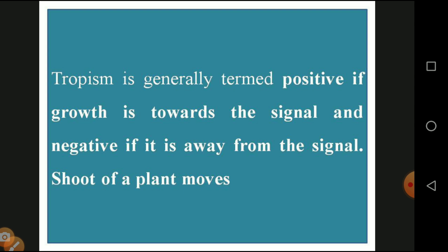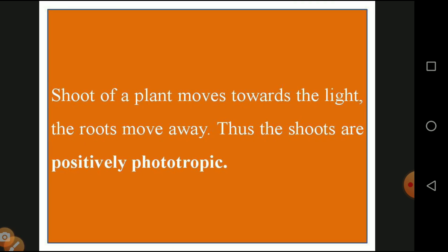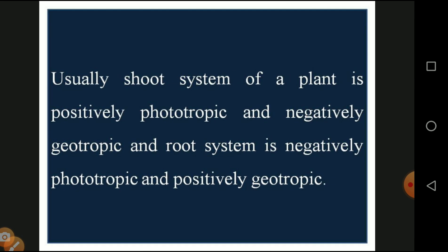Tropism is generally of two types: positive growth, meaning movement towards the stimulus, and negative growth, meaning movement away from the stimulus. The shoot of the plant moves towards light — called positive phototropism. The root moves away from light — called negative phototropism. The stem system is positively phototropic and negatively geotropic since it cannot move towards the soil. The root system is negatively phototropic and positively geotropic as it moves towards the soil.